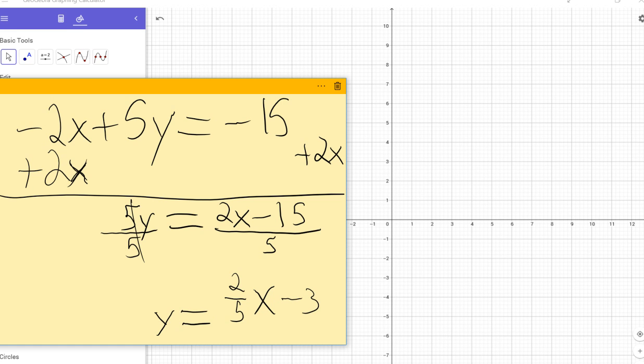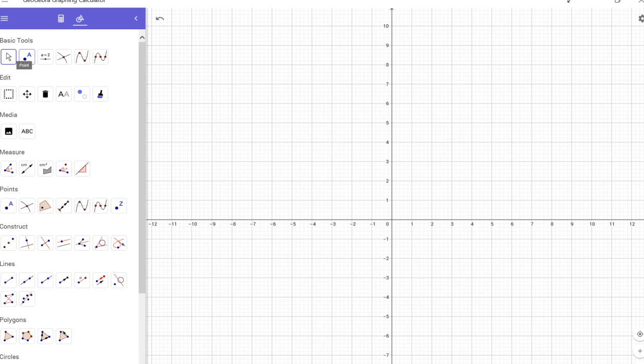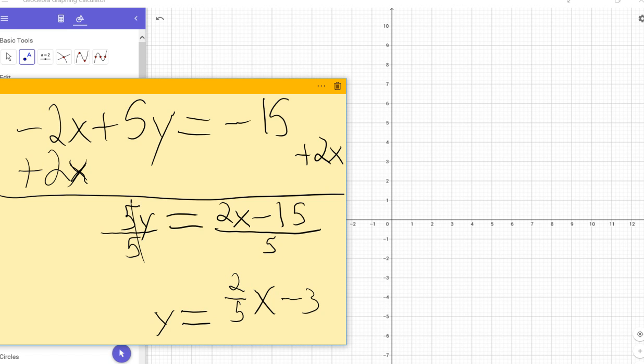And we know how to graph it from there. I'm going to get my point here. Our m value is 2 over 5. Our b value is 3. Excuse me. Negative 3. That's a big difference.